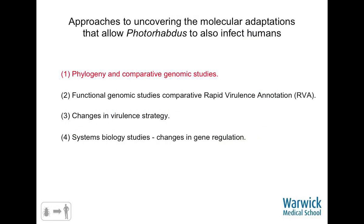So what have we been doing to understand this transition — this molecular adaptation allowing the jump from insect to human? The talk can be split into four sections: first, we looked at the phylogeny and some comparative genomic studies; then we did functional genomic studies using a process called rapid virulence annotation; then we looked at the change in virulence strategy under insect versus human conditions; and finally, what we've been doing more recently — systems biology studies looking at the bigger picture of gene regulation when facing an insect or a human.